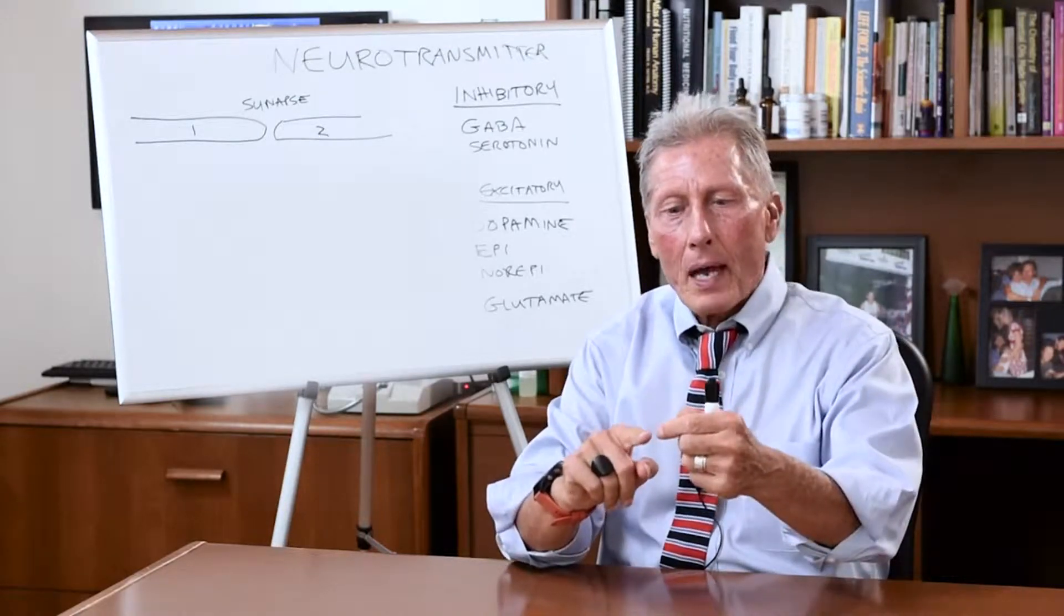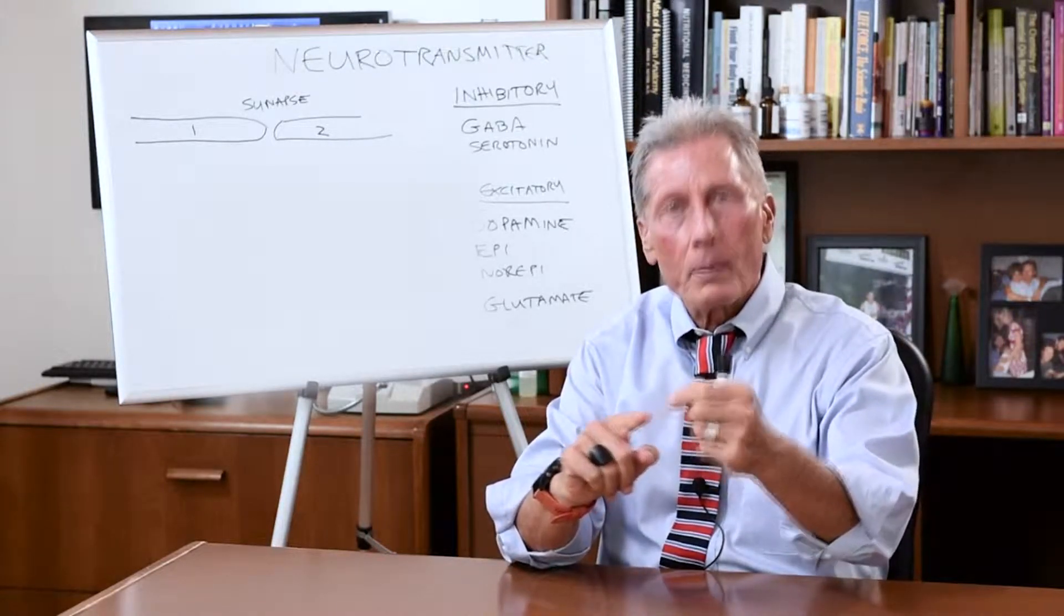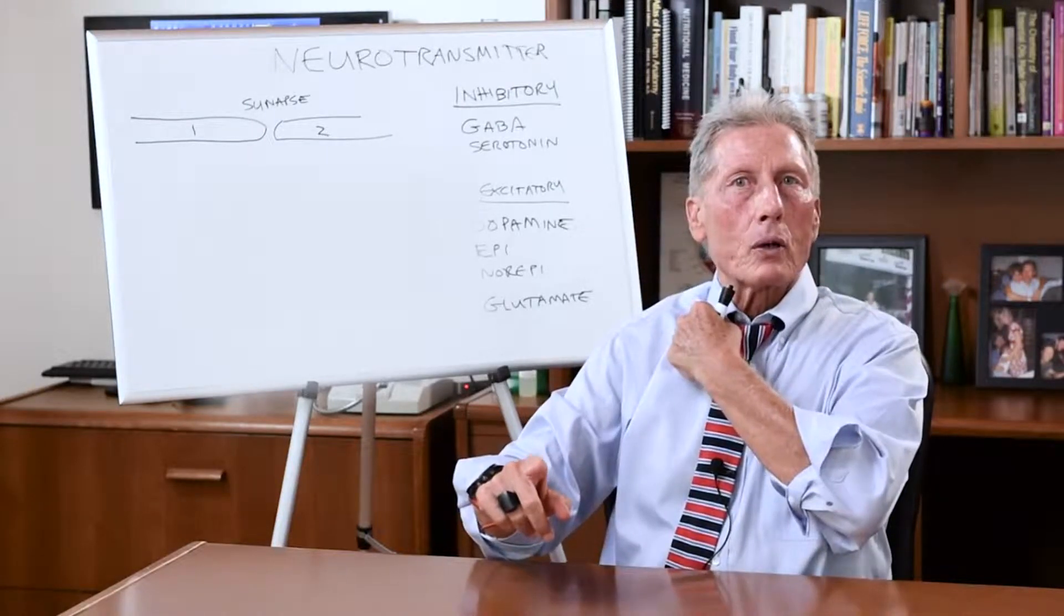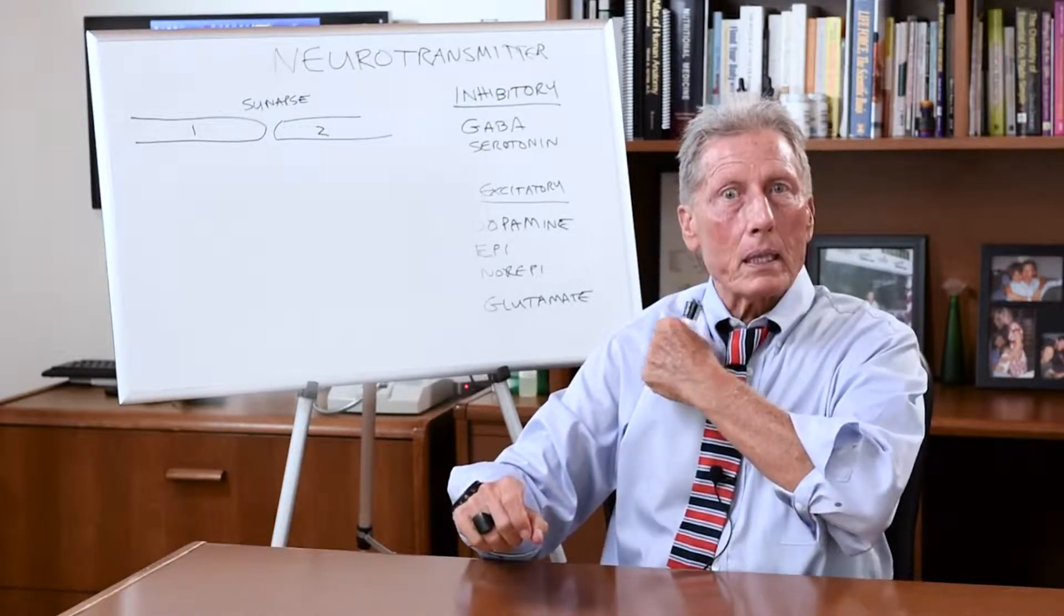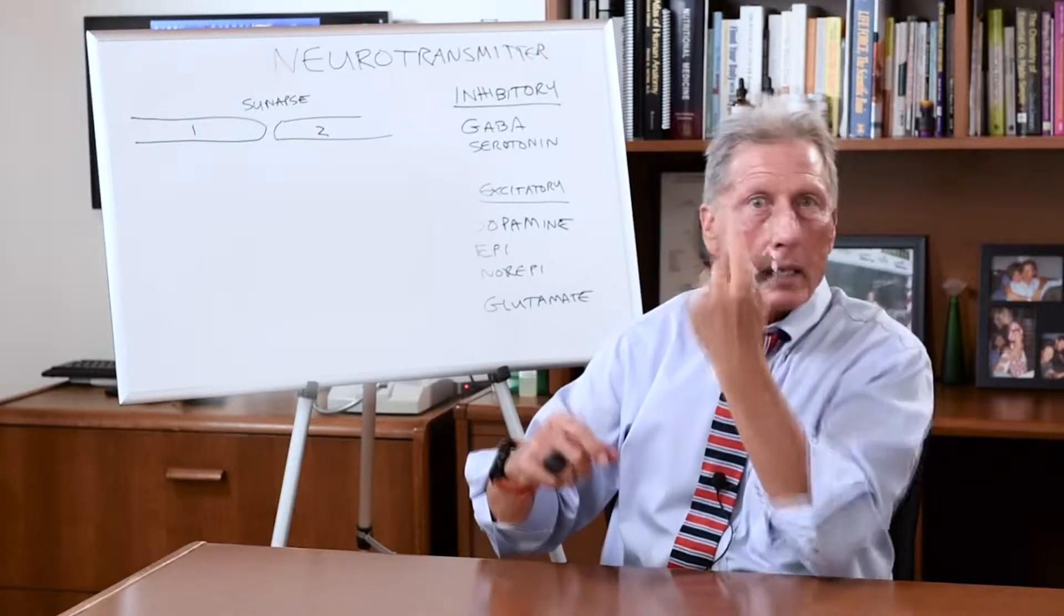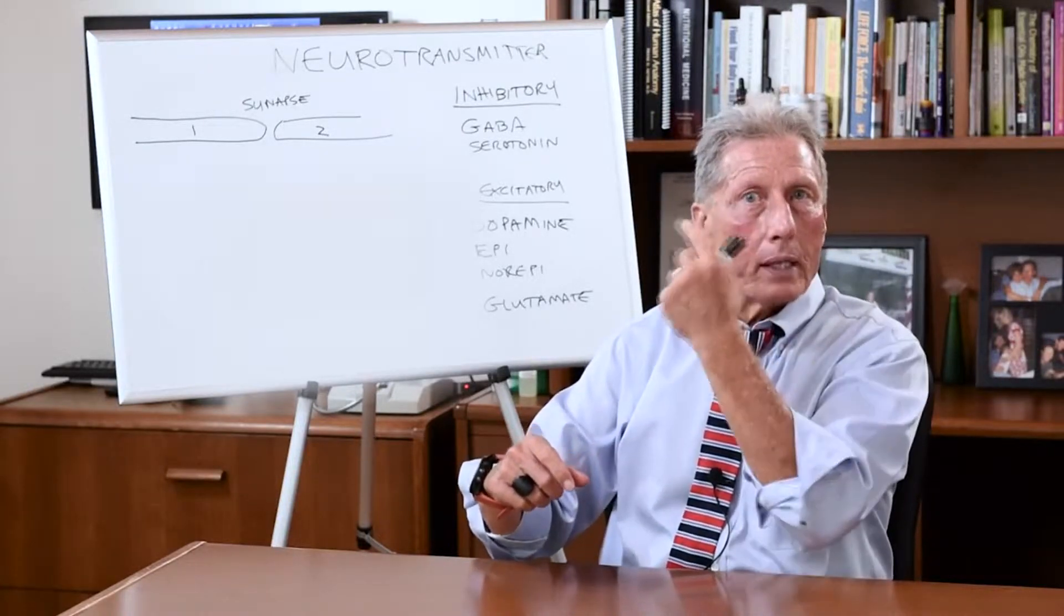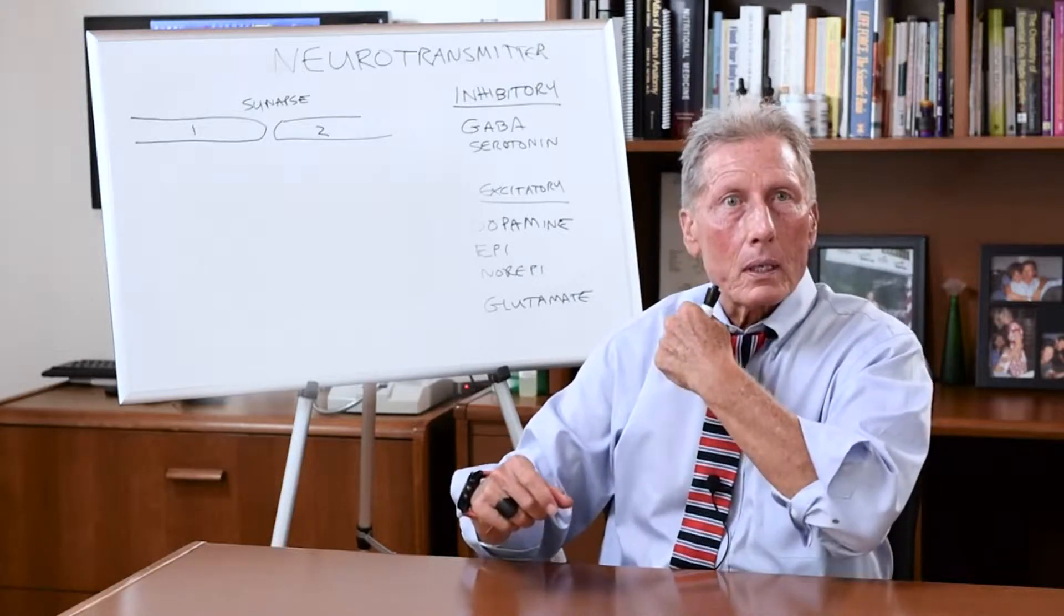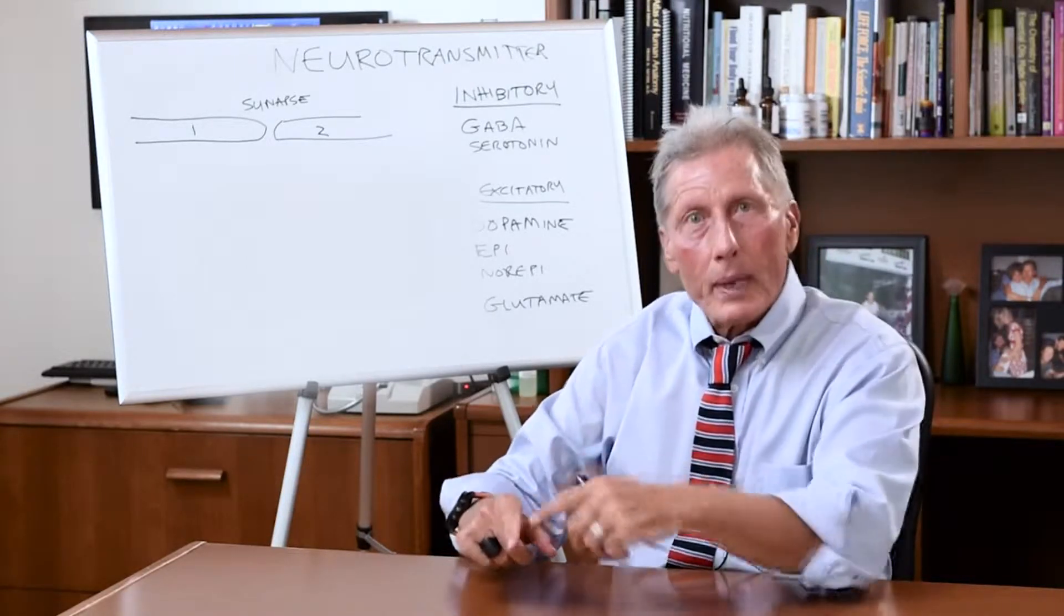So if I prick my finger and that nerve goes up to my spinal cord, it's going to meet another nerve which is going to take it to the brain, and then the brain is going to make a decision, and it's going to go back down to another nerve, transmit a message, and go back this way.